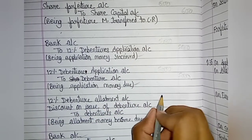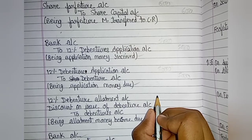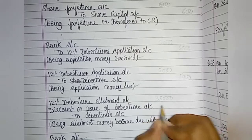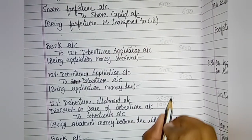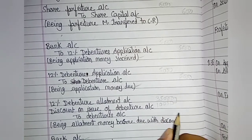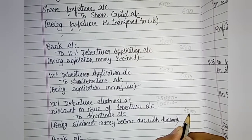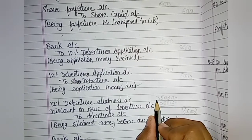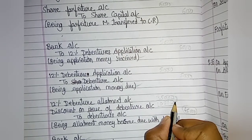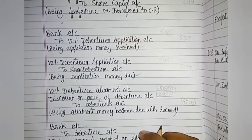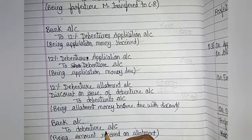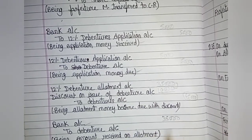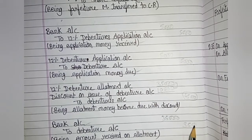On allotment — the due entry: 12% Debentures Allotment Account debit. Debentures received were Rs. 35,000 and discount is Rs. 10,000, so total debit is Rs. 45,000. To Debentures Account credit Rs. 45,000. For the received entry: Bank Account debit Rs. 35,000, To Debentures Allotment Account credit Rs. 35,000. Narration: being amount received on allotment.